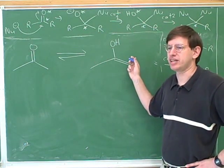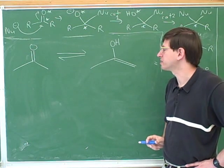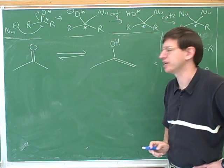And we saw that this is called tautomerization. This reaction when we go back and forth between an aldehyde or ketone and an enol is called tautomerization.